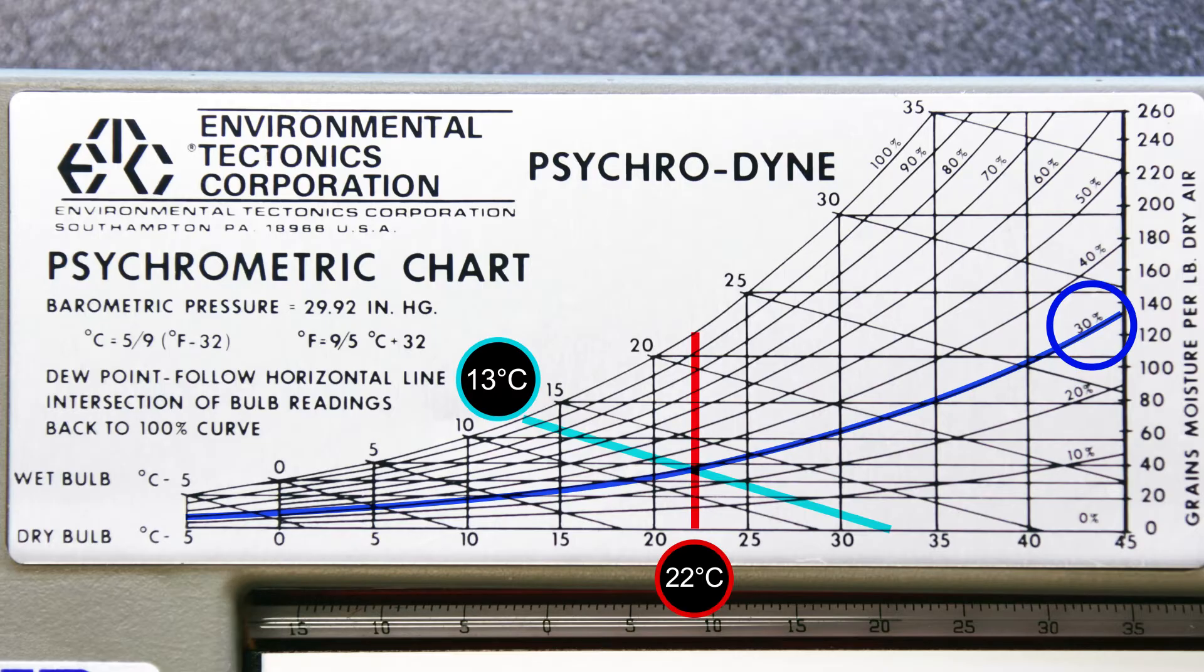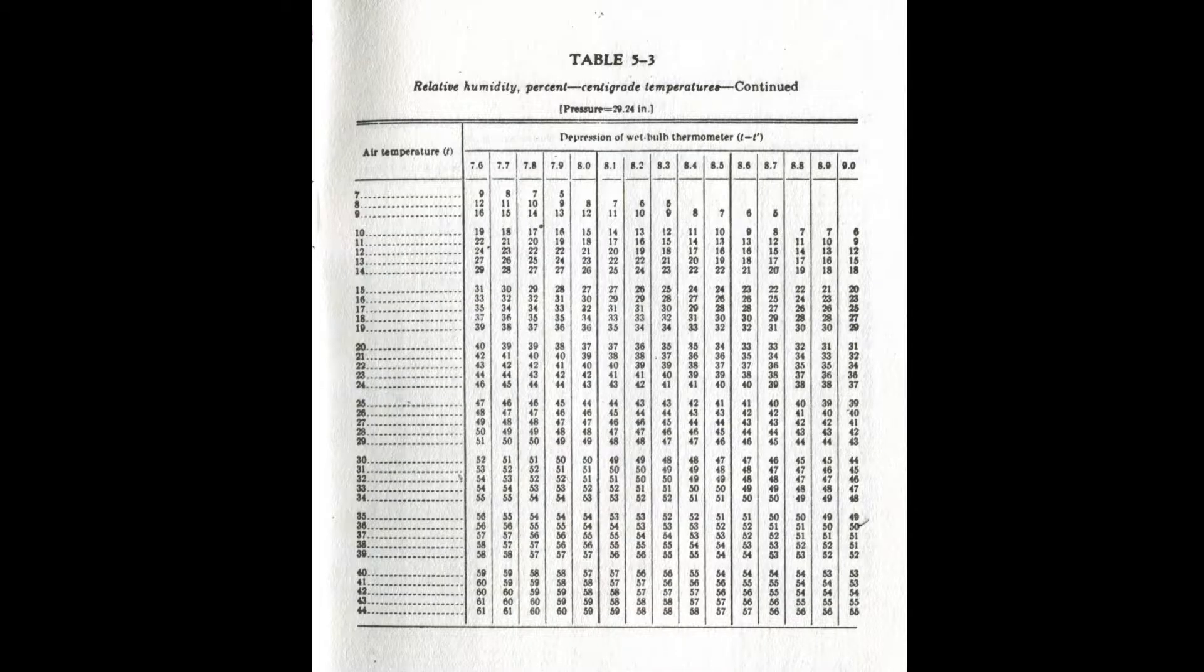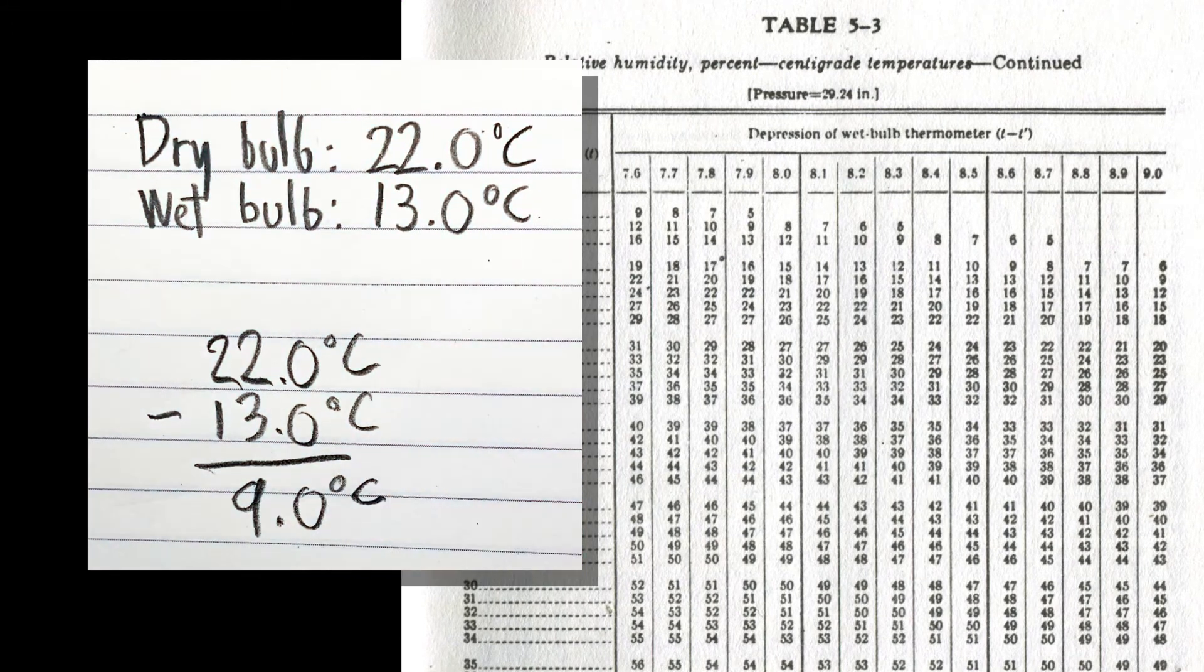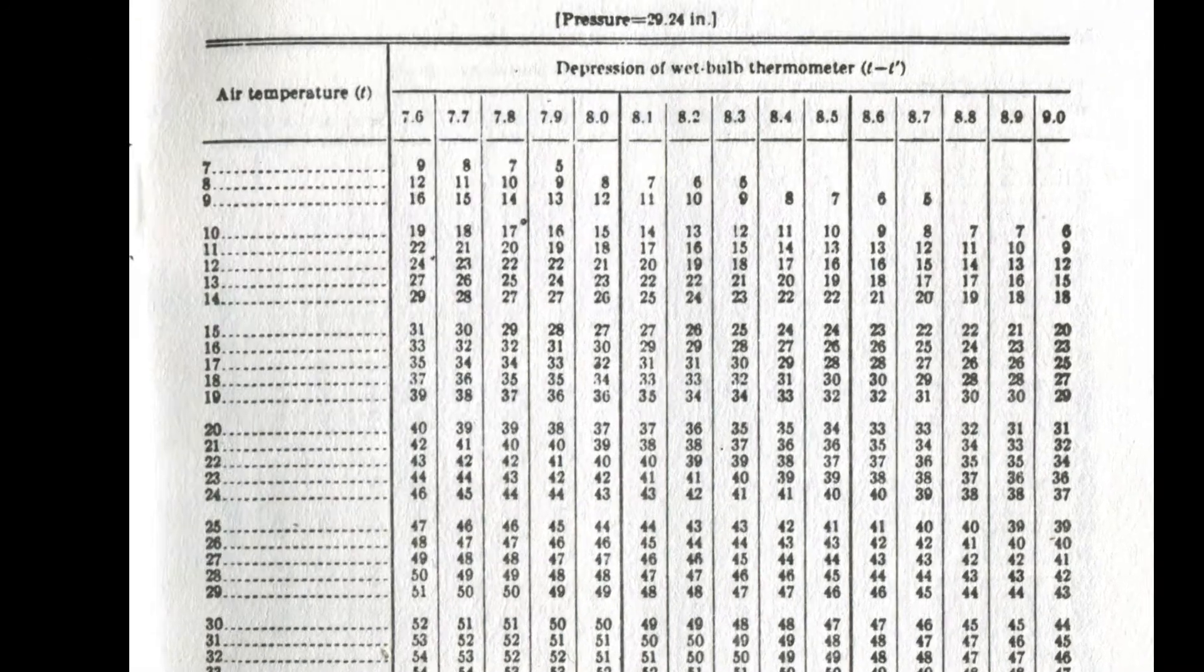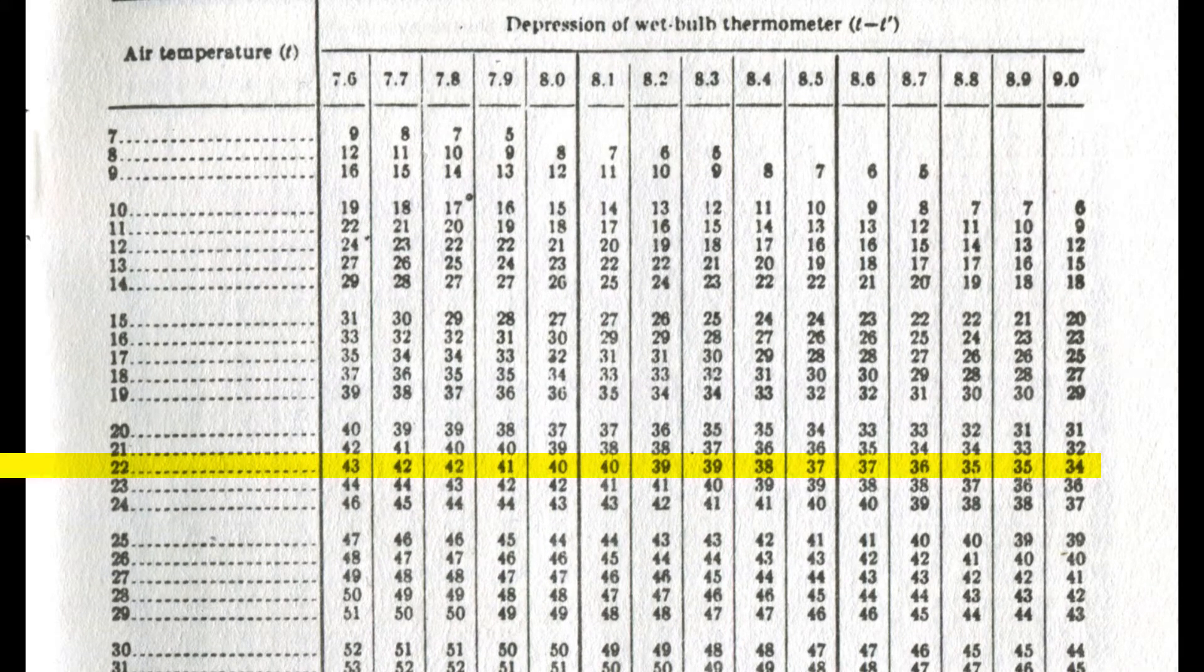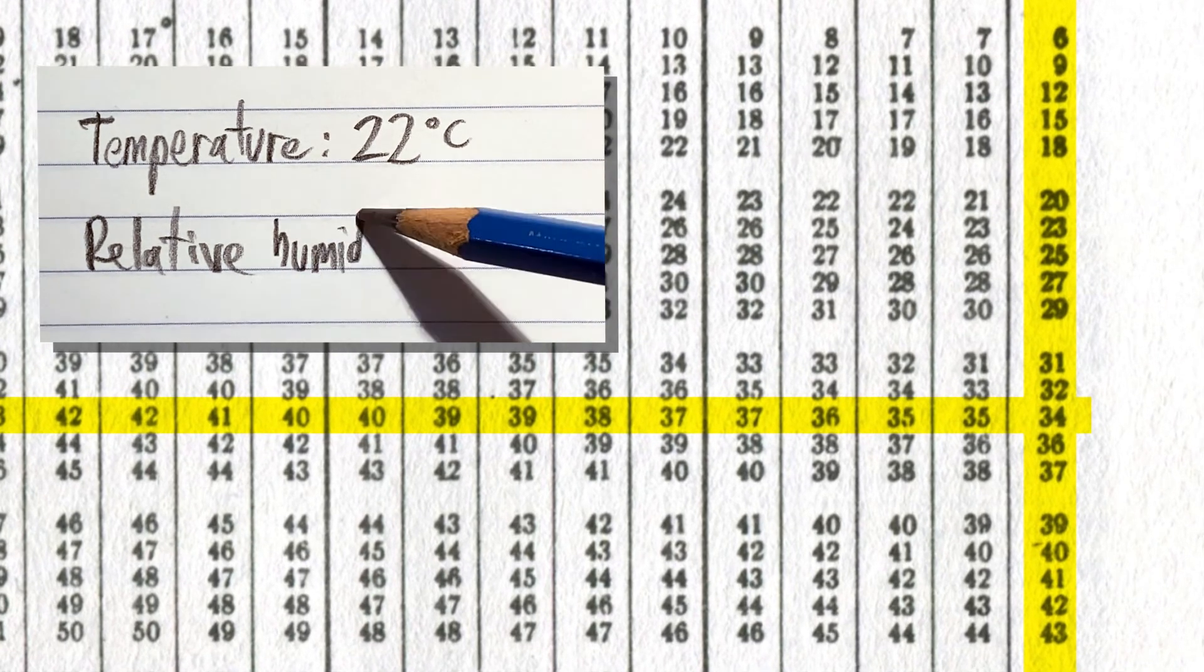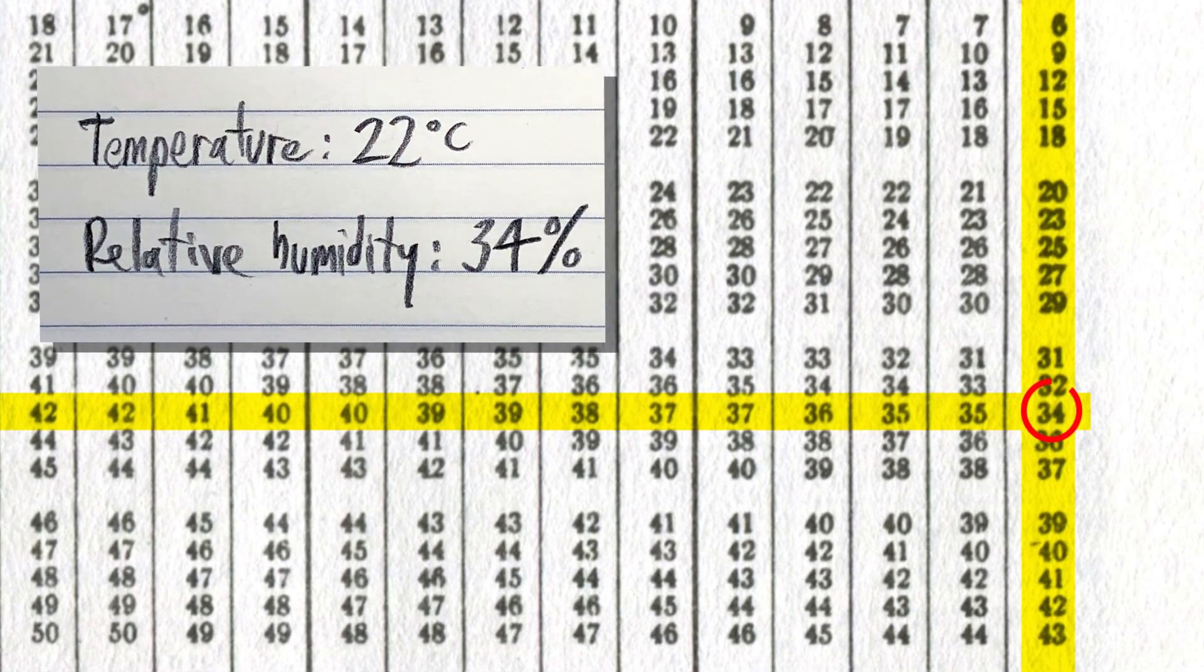For a more accurate relative humidity reading, use the tables in the instrument's manual. First, subtract the wet bulb temperature from the dry bulb temperature to calculate the difference. Next, find the air temperature row that corresponds to the dry bulb temperature value. Find the depression of wet bulb thermometer column that corresponds to the calculated difference between the dry bulb and wet bulb thermometers. The value where these two intersect is the relative humidity of the space.